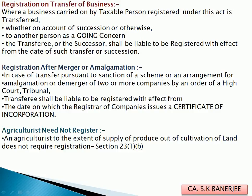Agriculture has been given an exemption from registration to the extent of supply of produce out of cultivation of land. If the agriculturist is only engaged in supplying produce from cultivation of land, registration is not needed. However, if the agriculturist also engages in any other activity beyond supplying produce out of cultivation of land, then that person must get registered.